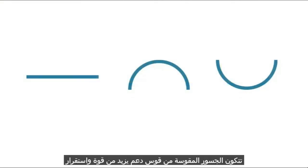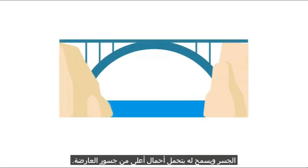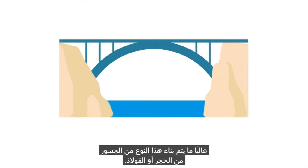Arch bridges consist of a support arch that increases the strength and stability of the bridge and allows it to withstand higher loads than beam bridges. This type of bridge is often built of stone or steel.